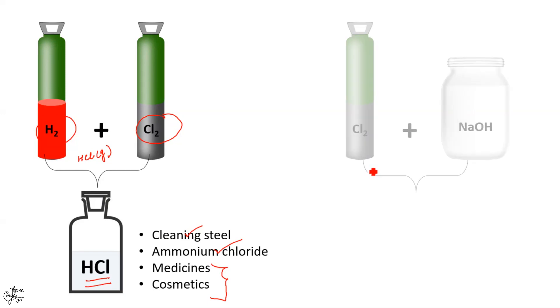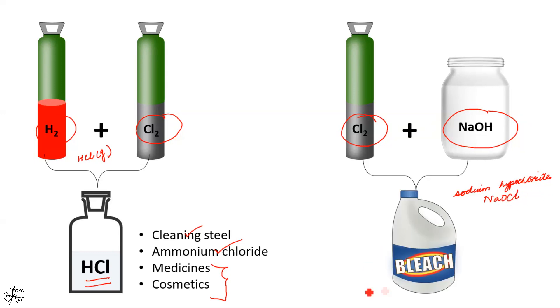Similarly, chlorine and sodium hydroxide combine together to give sodium hypochlorite with formula NaOCl. It is commonly known as liquid bleach or simply bleach which is used for cleaning purposes in houses as well as bleaching fabrics.